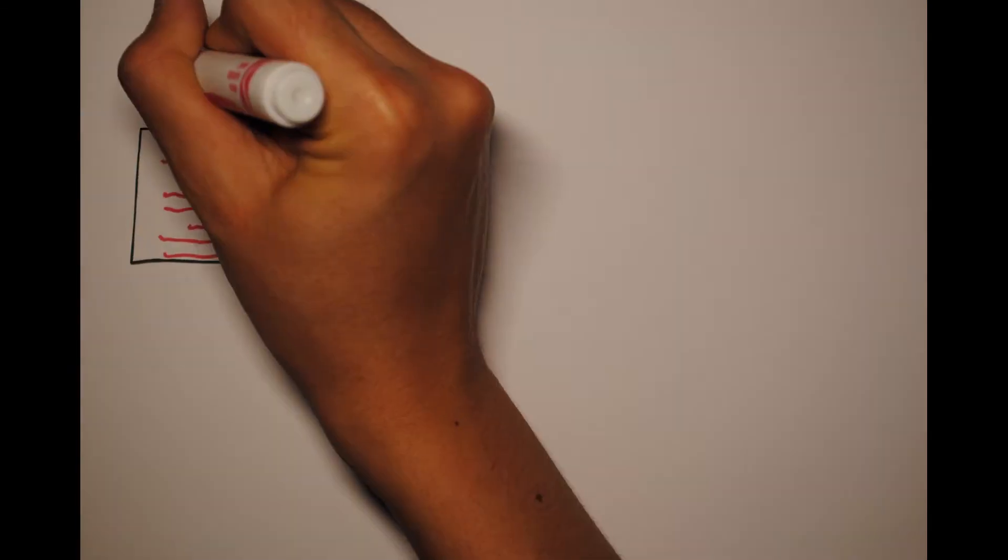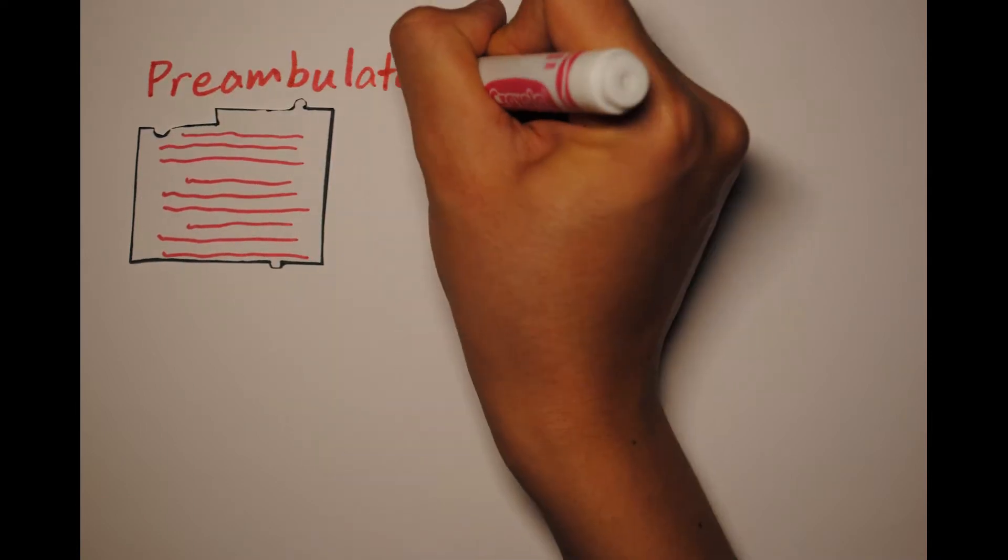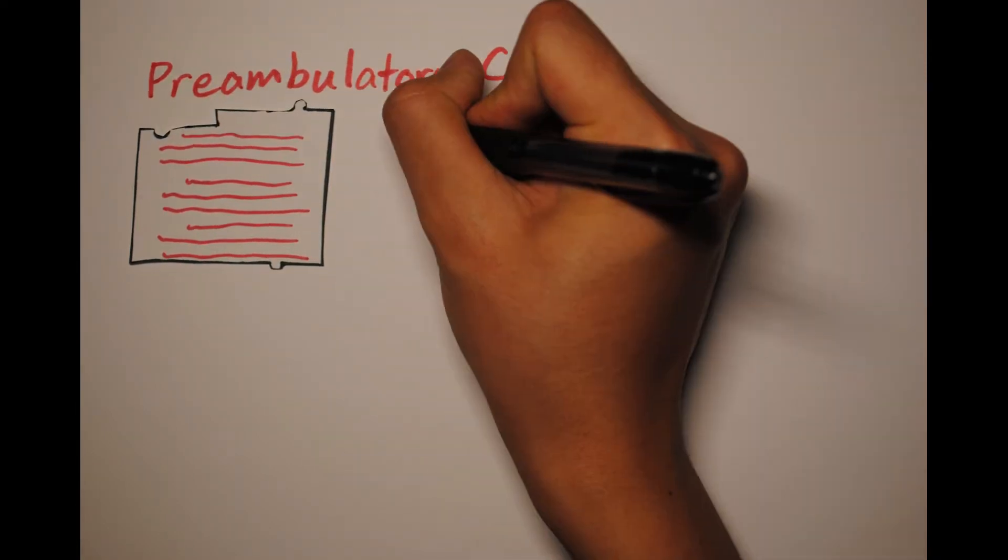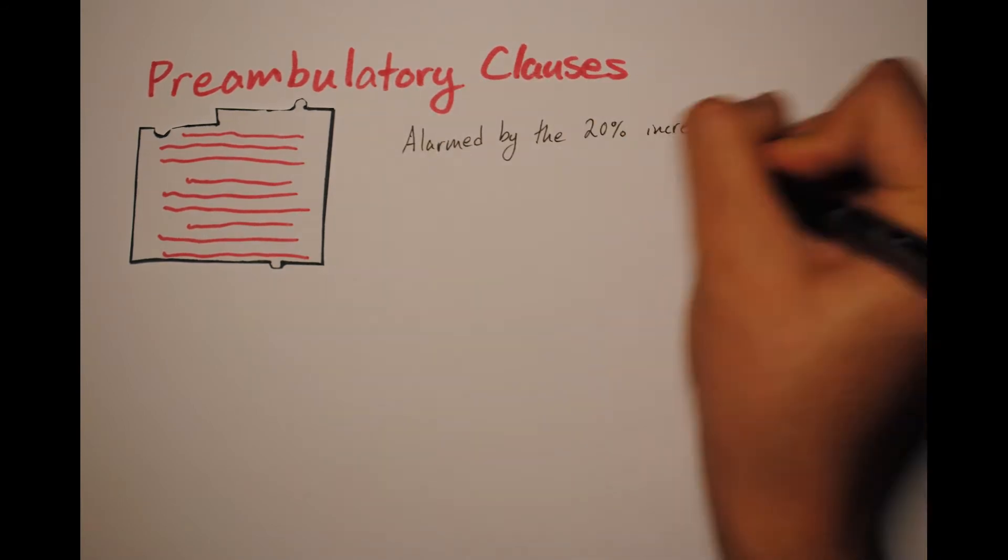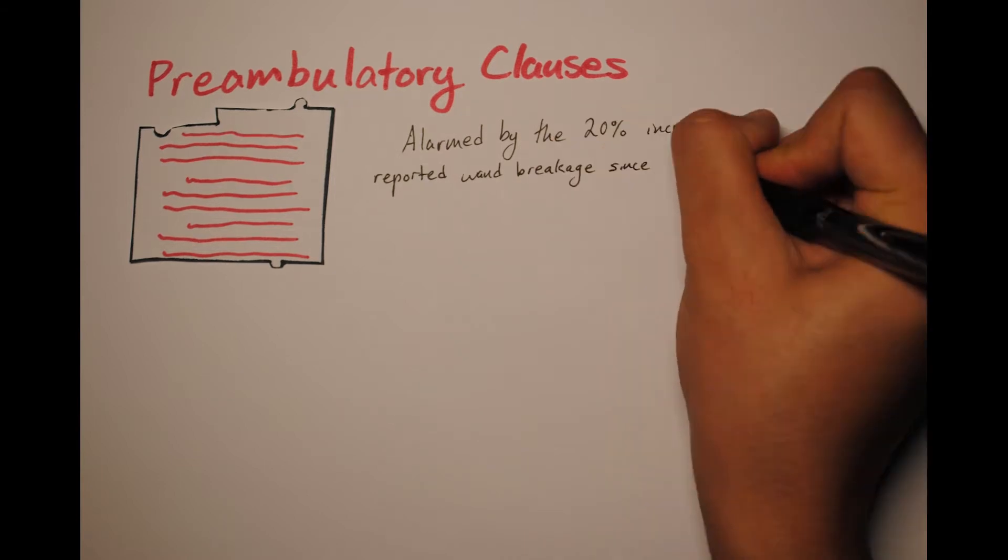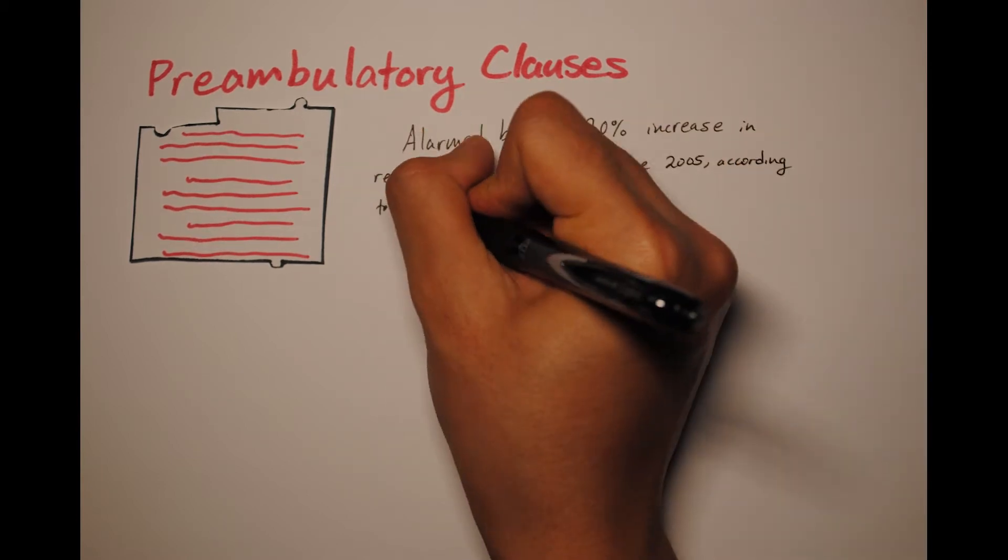The next step is to write the preambular clauses. These clauses are meant to provide background about the topic of your resolution and show off your research. Start them with an underlined preambulatory phrase, like recalling or bearing in mind. A list of these can be found on our website.